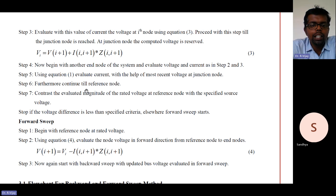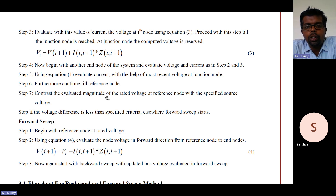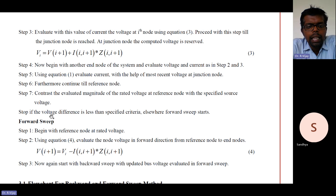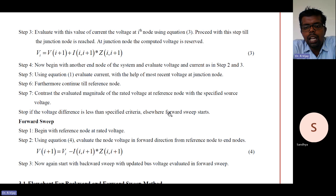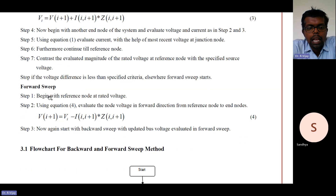Step 6: Continue till the reference node is reached. Step 7: Compare the evaluated magnitude of the voltage at the reference node with the specified source voltage. Stop if the voltage difference is less than the specified criteria; otherwise, the forward sweep starts. So if the voltage difference is less than the specified tolerance, stop; otherwise proceed to the forward sweep.